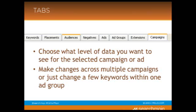Next are the tabs. The tabs appear across the top of the data view, and this is where you actually choose what level of data you want to see for the selected campaign or ad group. You can make changes across multiple campaigns or just change a few keywords within one ad group. Your options for these tabs, as you can see in this image, are keywords, placements, audiences, keyword negatives, ads, ad groups, extensions, and campaigns. You just select which tab you want, and that's the level you're going to see in the data view.